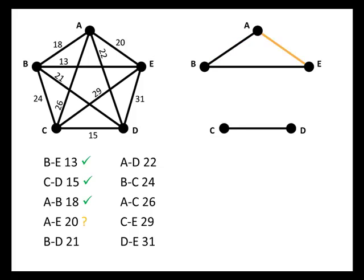Next we consider the edge from A to E. That edge causes a circuit, but it gives us a circuit that contains only A, B, and E — not all of the vertices — so we're not going to add it, and we cross that edge off our list. Next we consider the edge from B to D. This doesn't give us a circuit, but it does give us three edges that all meet at B, which we also can't have. So we cross that edge off our list as well.